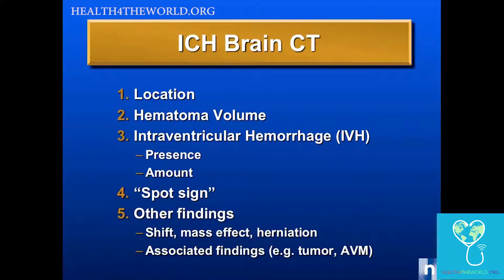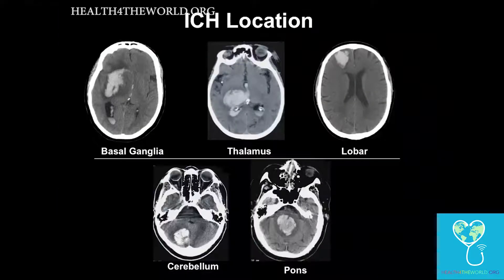What about neuroimaging? There are a number of characteristics of CT scan findings that are very helpful in the ICH patient: location, hematoma volume, intraventricular hemorrhage, what we call the spot sign, and other findings such as mass effect, herniation, or presence of an underlying tumor or vascular malformation. Location is the number one important thing to recognize from the CT scan. The typical locations for ICH are basal ganglia, thalamus, lobar location, cerebellum, and pons.